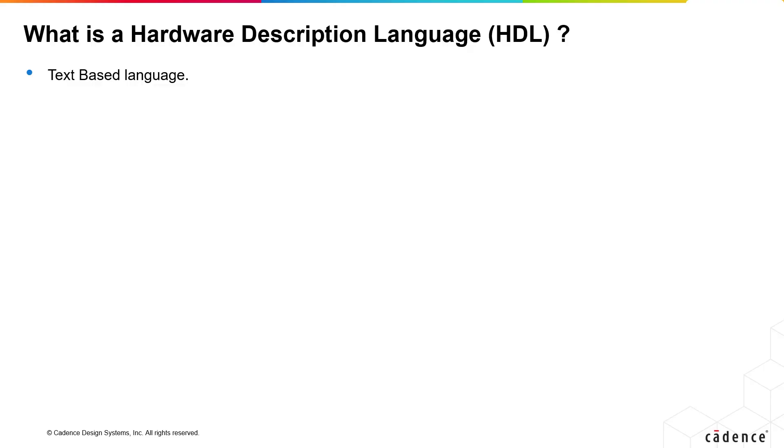HDL stands for Hardware Description Language. It is a text-based language. Unlike software languages that provide a set of instructions to CPU to perform a specific task, HDL describes the structure and behavior of any electronic systems, both analog and digital, most commonly digital.